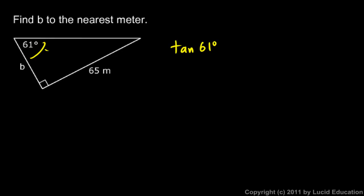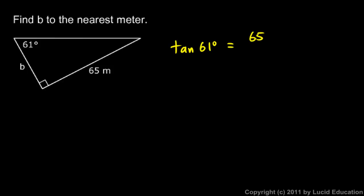The side opposite the 61 degree angle is the 65 meters, so we can say the tangent of 61 degrees equals 65 meters over the adjacent side. You should be able to see that if that's our angle of 61 degrees, then B is the adjacent side.